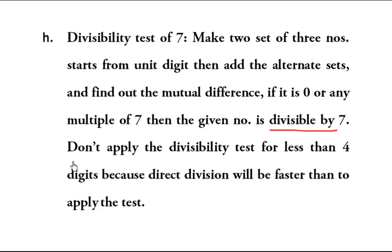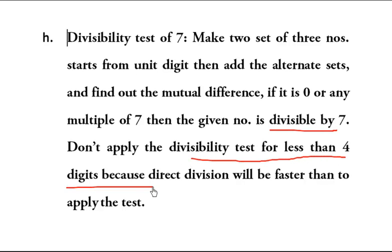We have to be careful that we should not apply the divisibility test for numbers with less than four digits, because in that case the direct division will be faster than applying the test. To elaborate this method, let's take some examples.